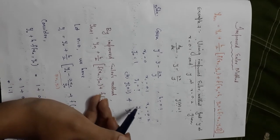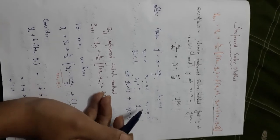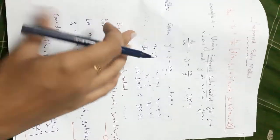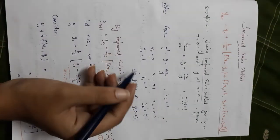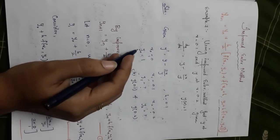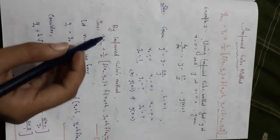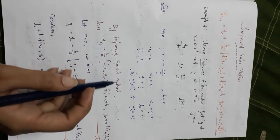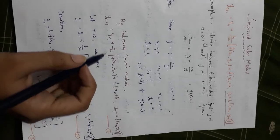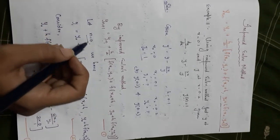We have y(0) = 1, meaning x₀ = 0 and y₀ = 1. By using the improved Euler method, we first put n = 0.